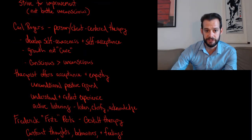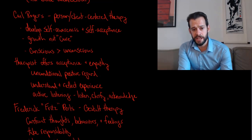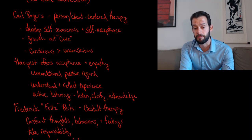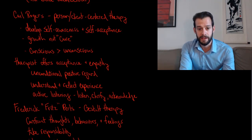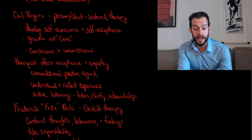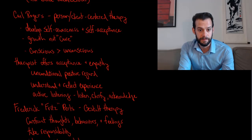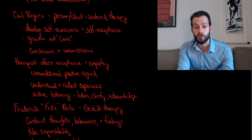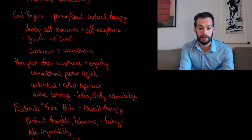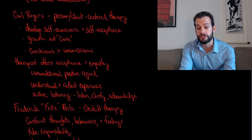One of the key figures in the humanistic movement was Carl Rogers, who introduced what he called person-centered therapy or client-centered therapy — deliberately avoiding the word 'patient.' He thought the main goal of client-centered therapy is to help the client develop self-awareness and then self-acceptance, with personal growth as the goal rather than necessarily a cure for mental illness. He also emphasized that conscious thoughts are more important than unconscious drives.